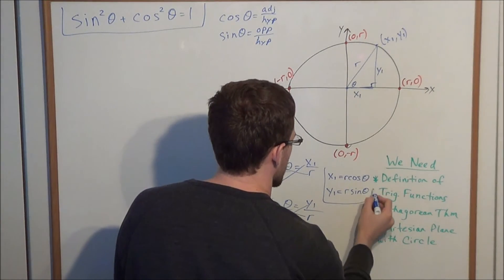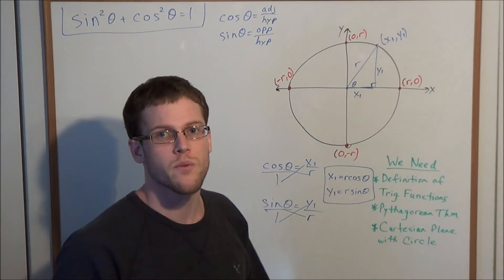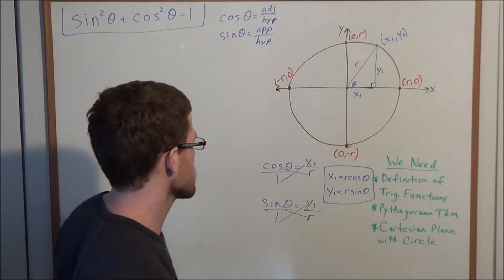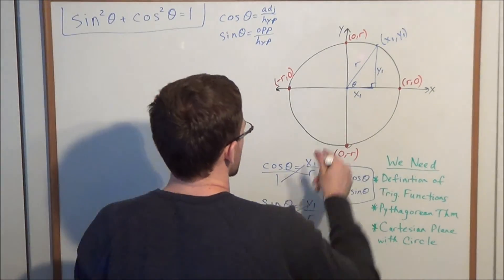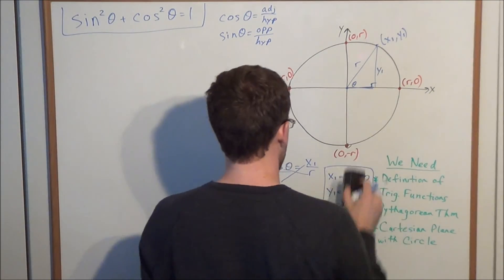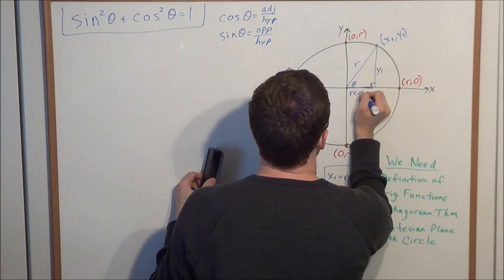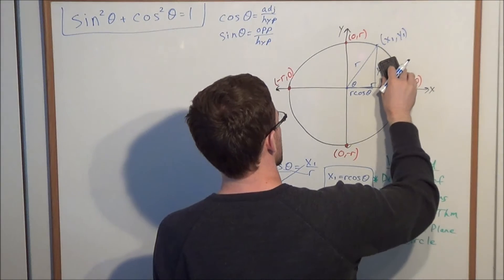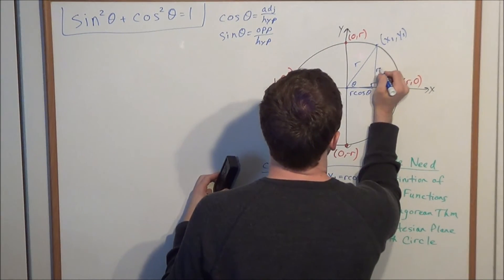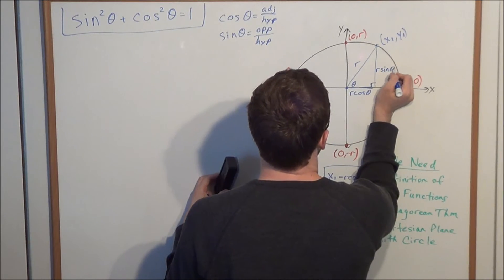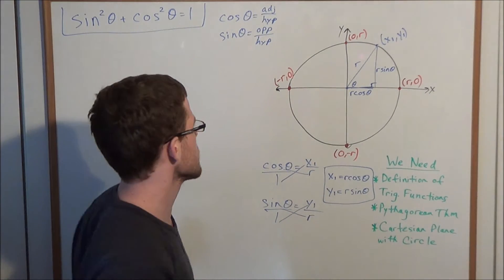We're going to use this now to prove the Pythagorean identity sine squared theta plus cosine squared theta equals 1. Instead of x₁, let's now label that side r cosine theta, and instead of y₁ we substitute r sine theta. Now we have a right triangle, and this is where the Pythagorean theorem comes in.